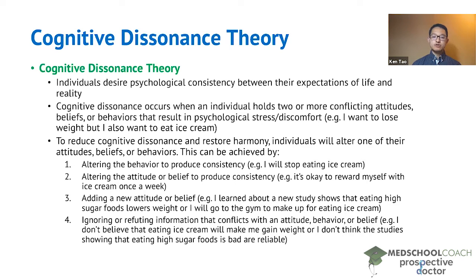Second, the individual can alter the attitude or belief to produce consistency. So before, if they want to lose weight but they also want to eat ice cream, those two are in conflict with each other. So the individual could decide it's okay to reward myself with ice cream once a week. Since it's a reward, it's justifiable, and since it's once a week, they could also argue that they will still be able to lose weight.